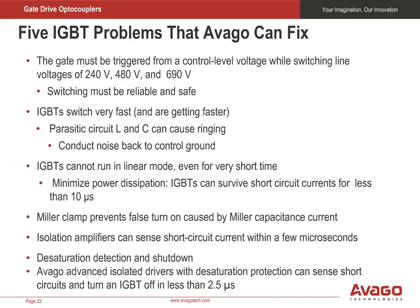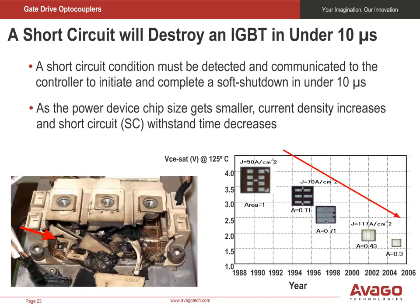Some of our latest isolated gate drivers include a Miller clamp that prevents false turn-on due to the large currents flowing through the IGBT's Miller capacitance. Our isolation amplifiers can sense the short-circuit current and react within a few microseconds. Avago's advanced isolated drivers with desaturation protection can sense short-circuits and turn an IGBT off in less than 2.5 microseconds. Protection circuits must be activated to shut down the power device in under 10 microseconds to prevent switch damage.